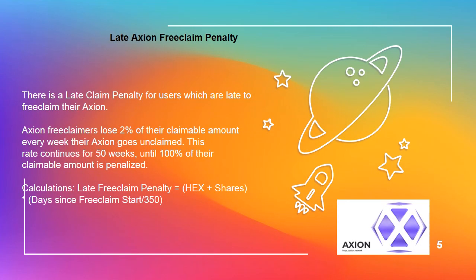Late Axion free claim penalty: there is a late claim penalty for users who are late to free claim their Axion. Axion free claimers lose 2% of their claimable amount every week their Axion goes unclaimed. This rate continues for 50 weeks, until 100% of their claimable amount is penalized.